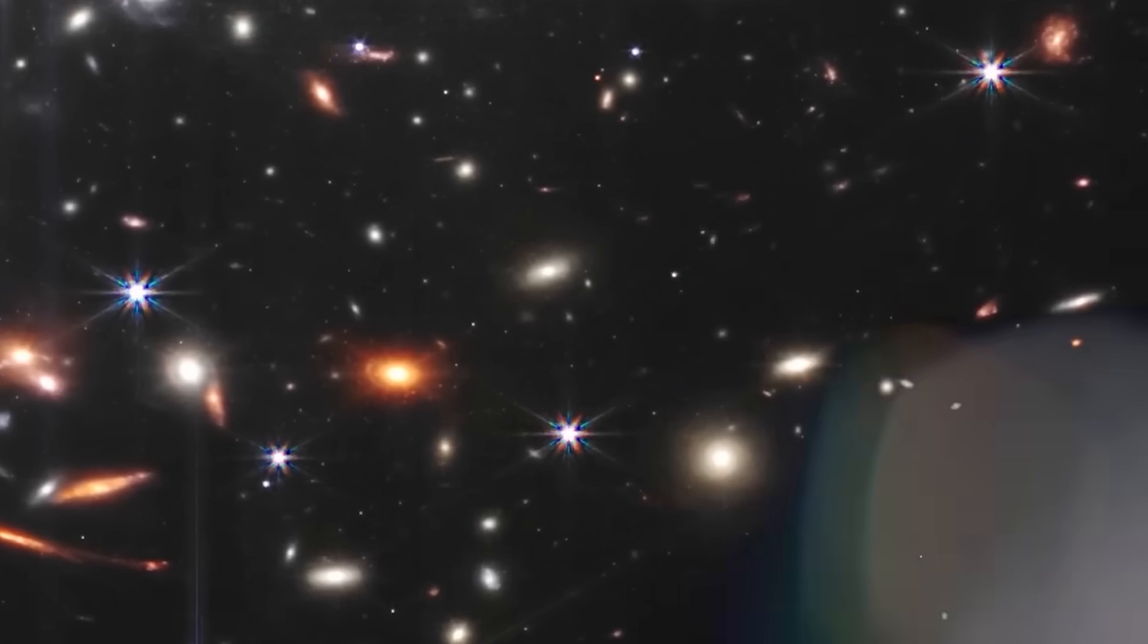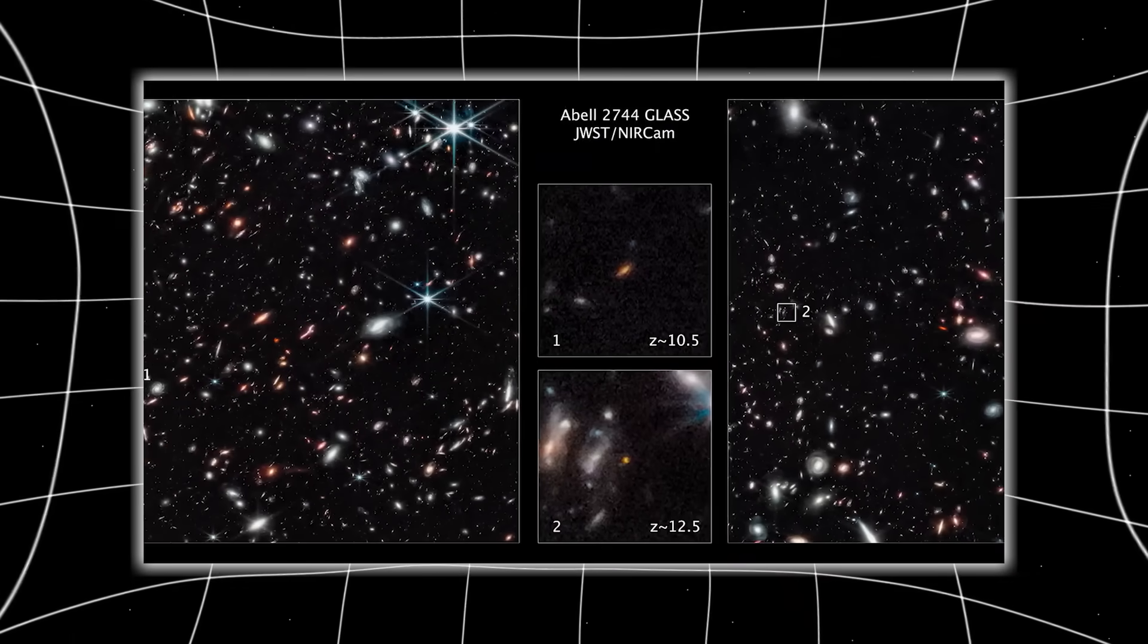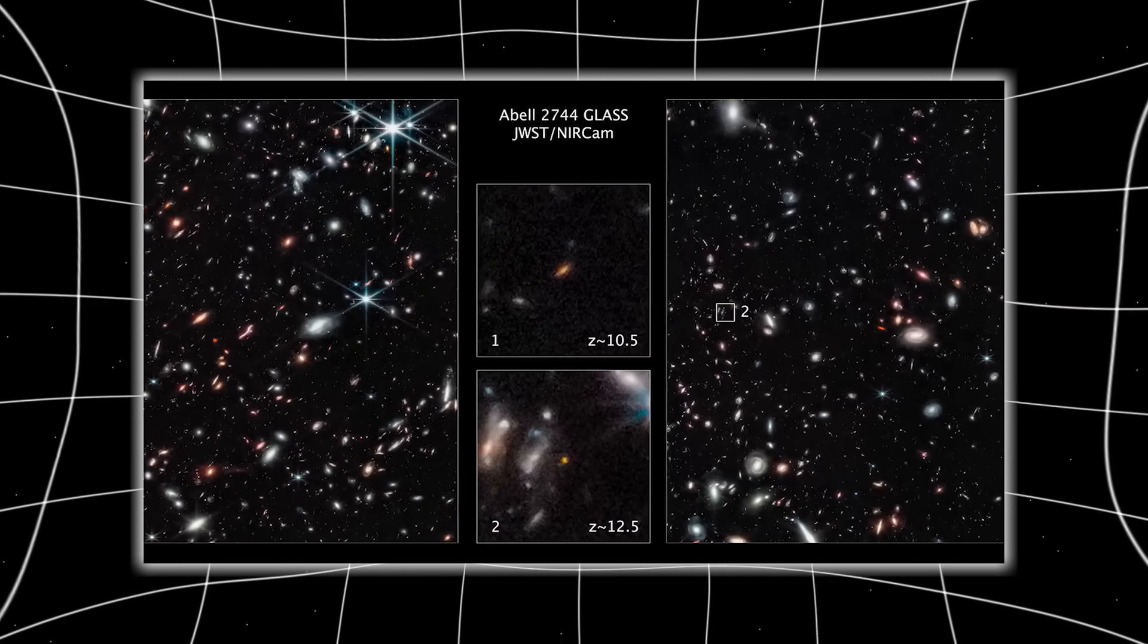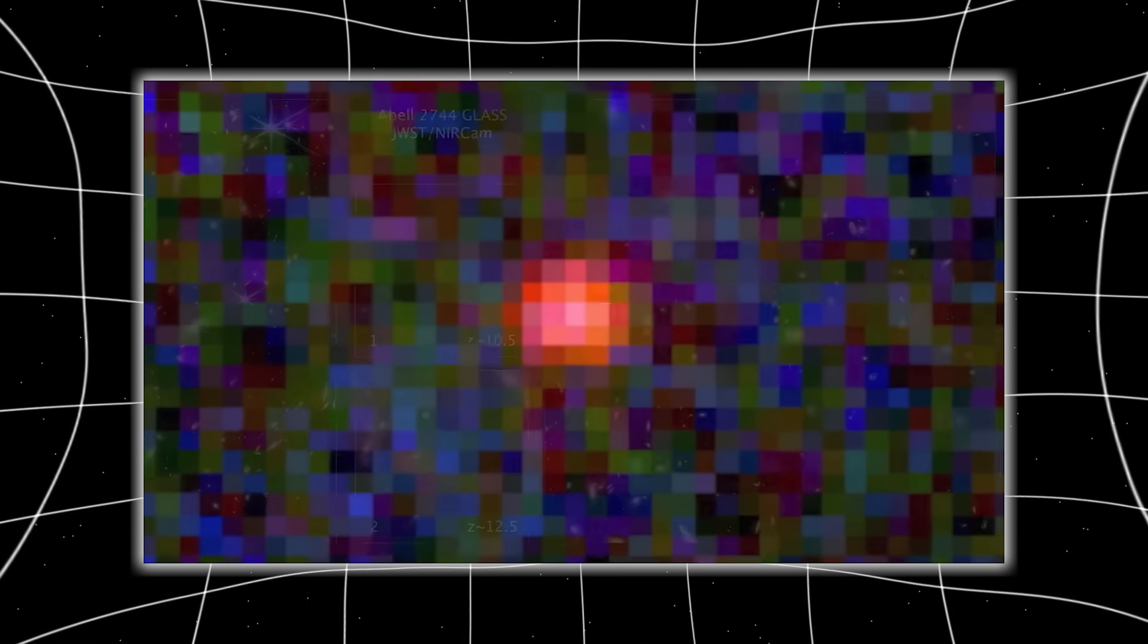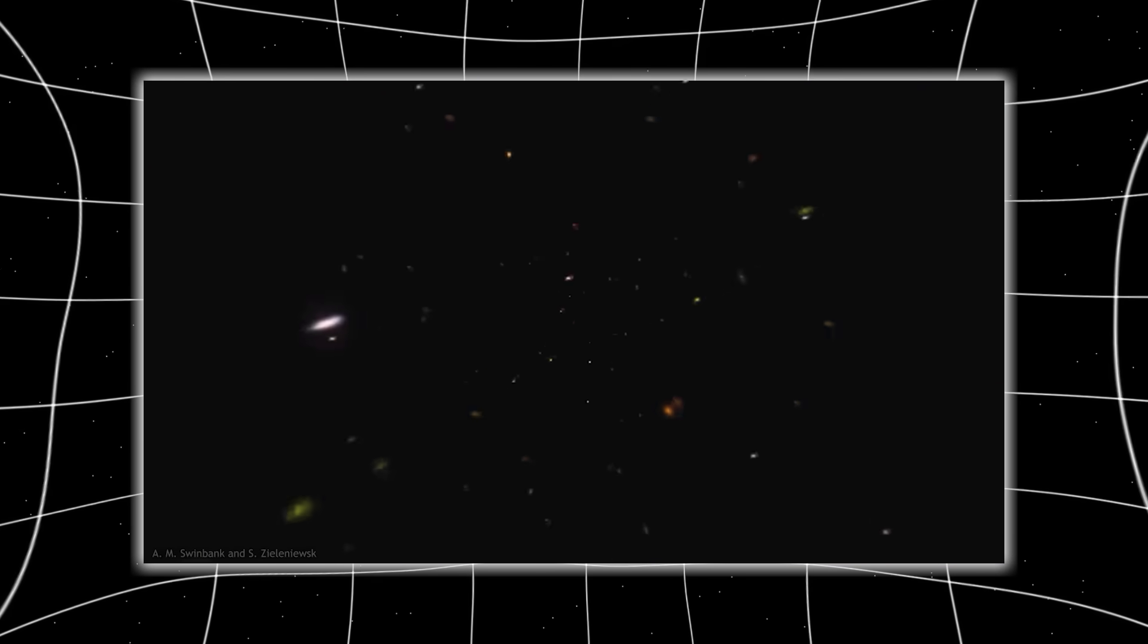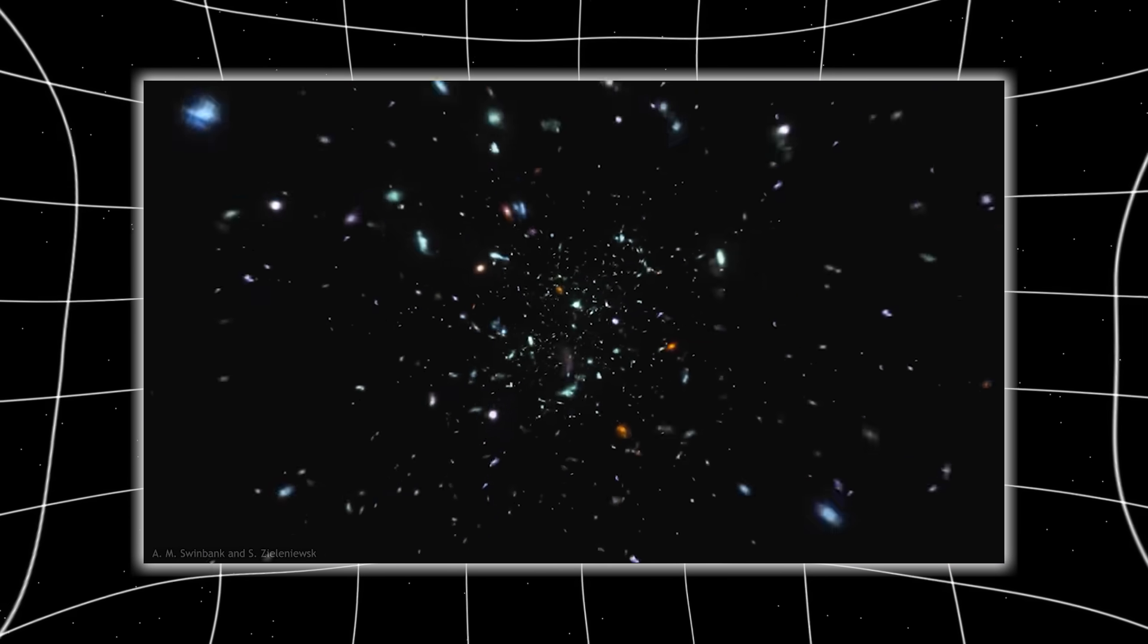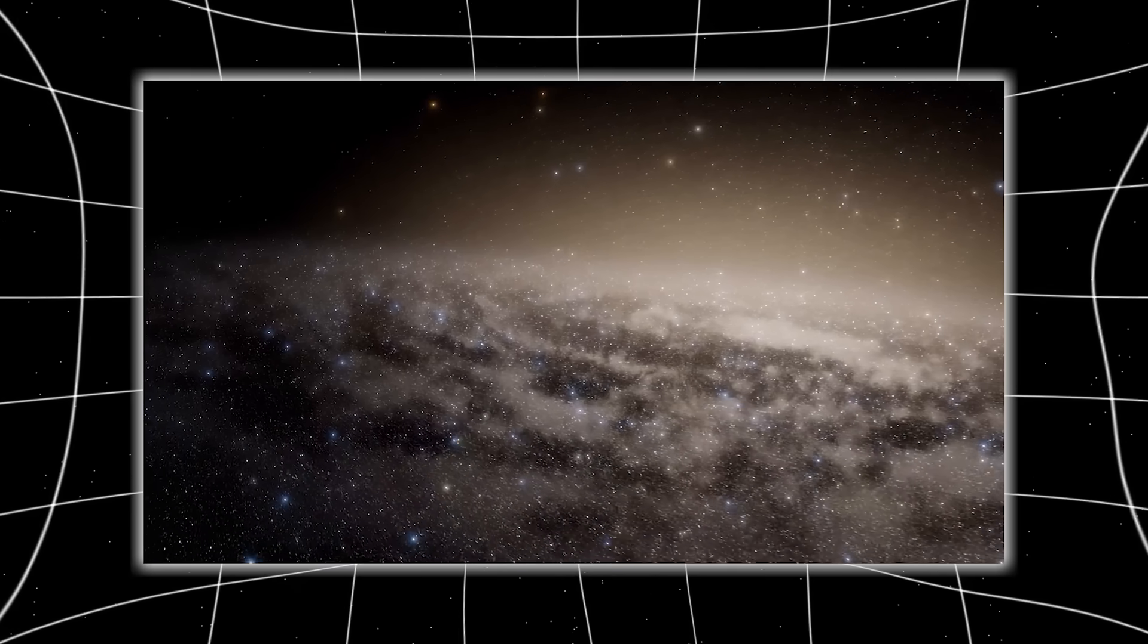But when Webb turned its golden mirrors toward a remote and supposedly quiet sector of the sky, one of those vast black stretches where we expected little more than darkness, it captured something that should never have existed at that time. A fully developed galaxy. Not a hazy blob or scattered gas, but a complex rotating system of stars, complete with spiral arms and a monstrous black hole at its heart. Not just formed, but thriving.